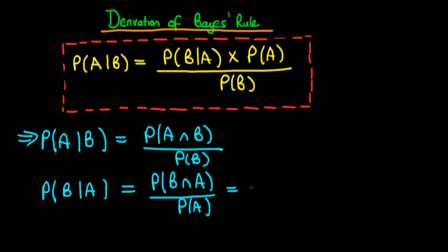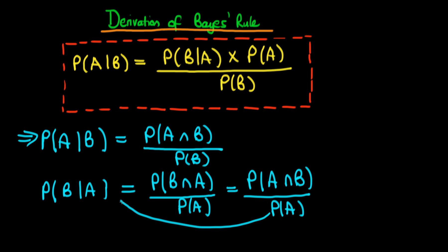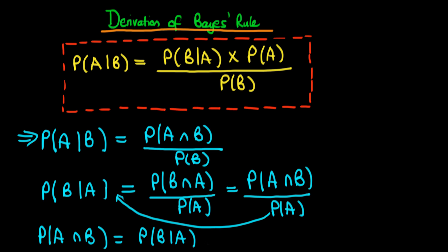So we can rewrite this second numerator as the probability of A and B occurring divided through by the probability of A. Then we multiply through by the probability of A, which gives us an expression for the numerator: the probability of A intersection with B. We find that the probability of A intersection with B is the same thing as the probability of B given A occurs, times the probability of A.